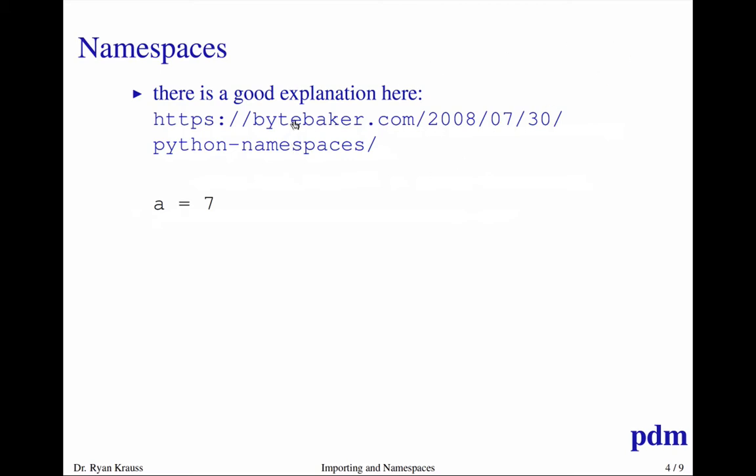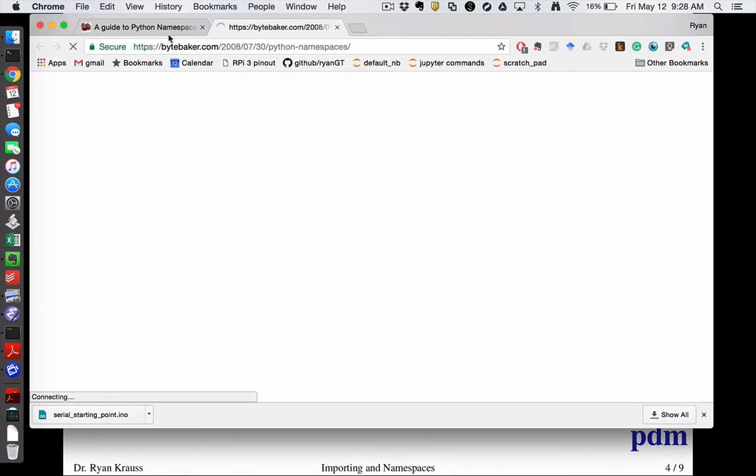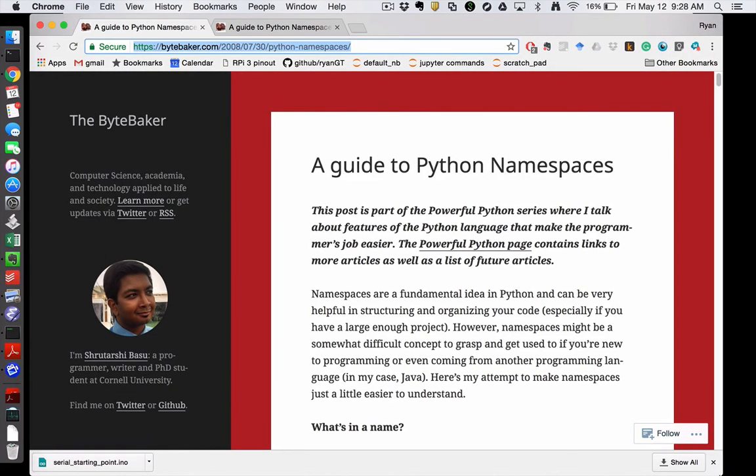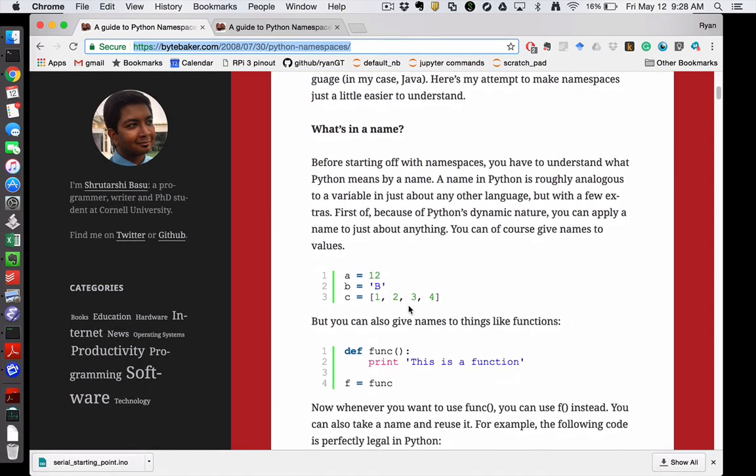So there's a really great explanation of variables and namespaces on this page. I'll try to remember to put this link in the comments below, but that should take me, it's actually already opened, to here. And so this person seems to do a really good job of explaining kind of an abstract concept in a way that is pretty clear. So first you talk about what is a name, and I'll have that on my slides as well.